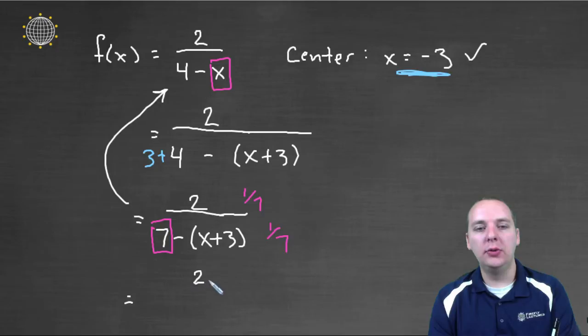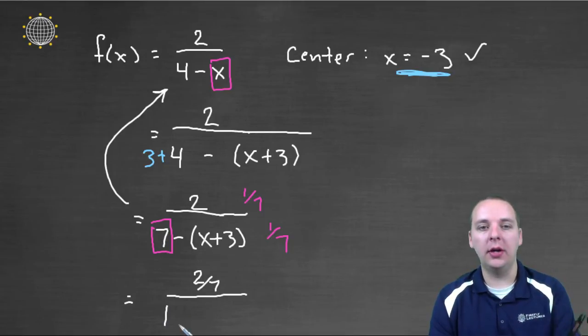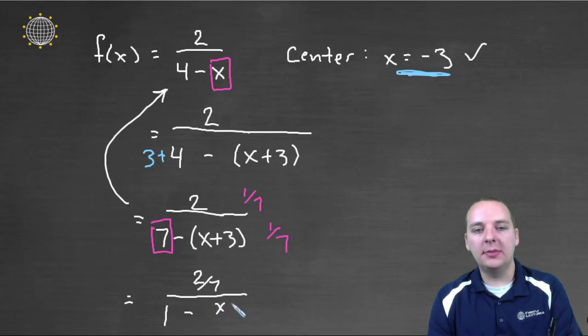OK, so this would be 2 sevenths divided by what? 1 seventh times 7 would make 1, alright, there's our 1, very good, 1 minus x plus 3 over 7, and we'll put that in parenthesis.